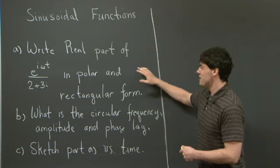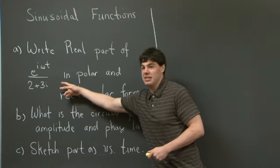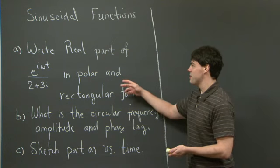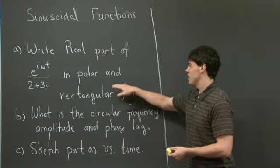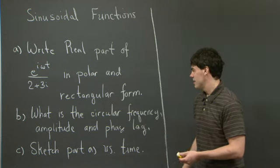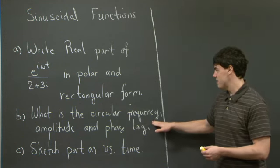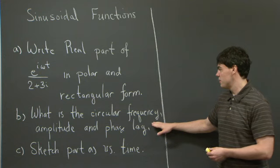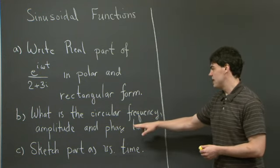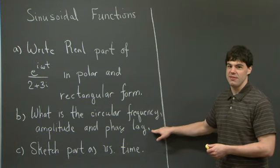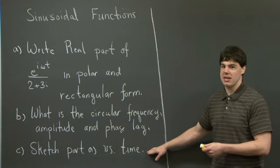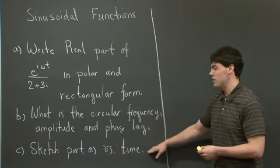Specifically, we're interested in the function e to the i omega t divided by 2 plus 3i. We're asked to write the real part of this function using polar form and then rectangular form. And secondly, we're asked several properties of the real part of this function: the circular frequency, the amplitude, and the phase lag.